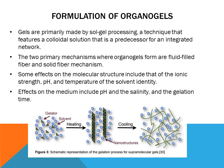Formulation of organogels. Gels are primarily made by Sol-Gel Processing, a technique that features a colloidal solution that is a predecessor for an integrated network. The two primary mechanisms where organogels form are a fluid-filled fiber and solid fiber mechanism. Some effects on the molecular structure include ionic strength, pH, and temperature of the solvent identity. Effects on the medium include pH, salinity, and gelation time.